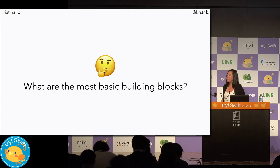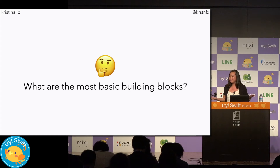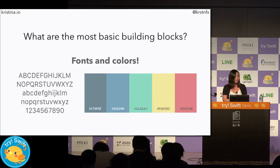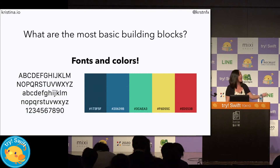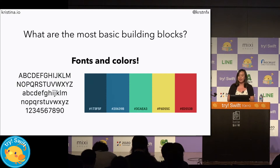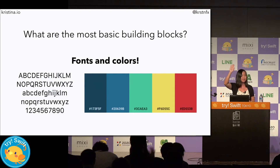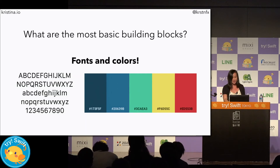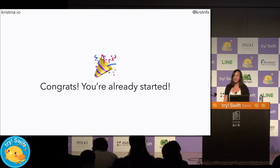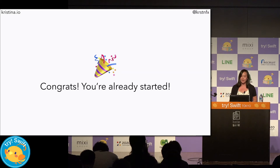If atoms are the most basic building blocks of matter, what are the most basic building blocks of apps? Fonts and colors. Pretty much every app has some text to display and generally has its own custom color palette. Chances are you already have a utility class for both of these in your established code base. Can anyone raise your hand if you already have custom fonts or colors in your code base? Congrats — you're already well on your way to having an implemented design system. Now let's look at how to build these into your code base.